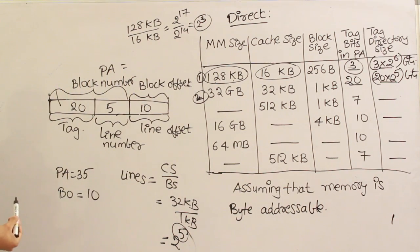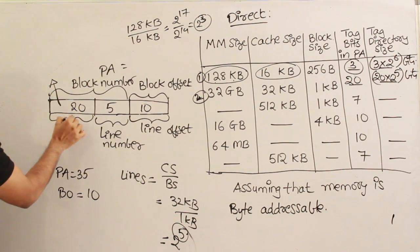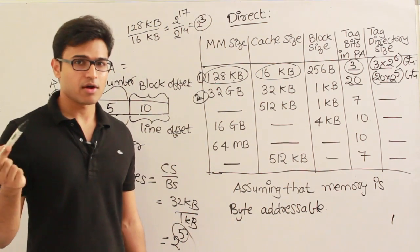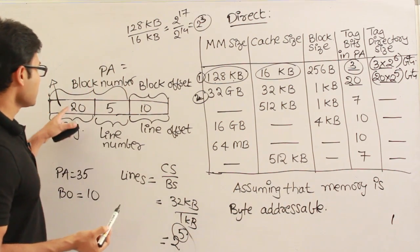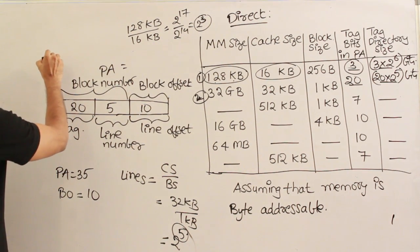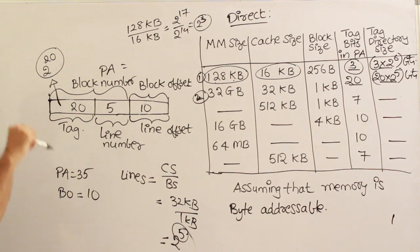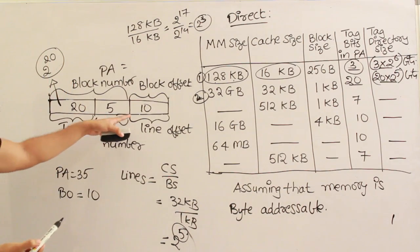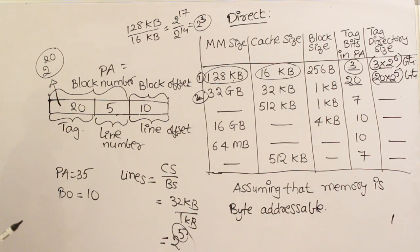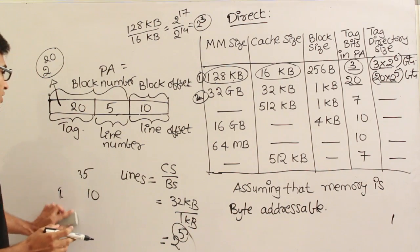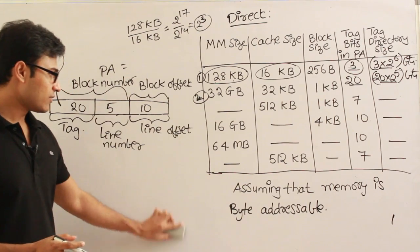The tag bits are used to identify which block is currently present in a cache line. There are 2^20 possibilities for every cache line, meaning 2^20 blocks of main memory are mapped to one cache line. You can also see this directly from the ratio of main memory to cache size.